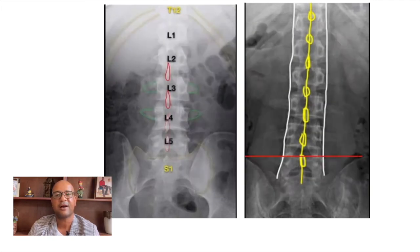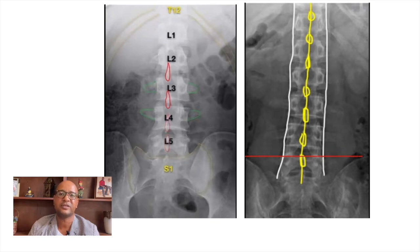For the AP view, the provider should be able to see the L1 to L5 and T12 vertebral bodies, the T11–T12 space, and the sacrum. For the lateral view, the vertebral bodies, transverse processes, facet joints, and pedicles should be clearly seen.